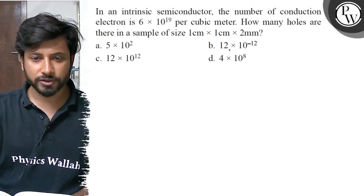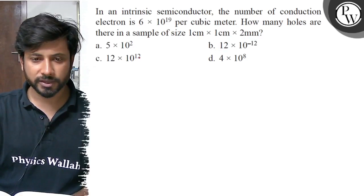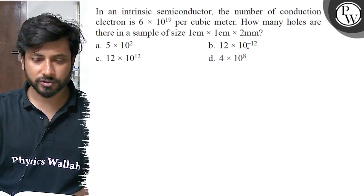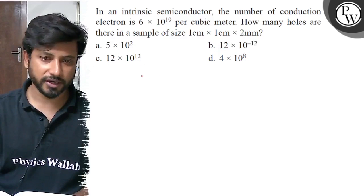Option A, 5 into 10 to the power 2. Option B, 12 into 10 to the power minus 12. Option C, 12 into 10 to the power 12. Option D, 4 into 10 to the power 8.